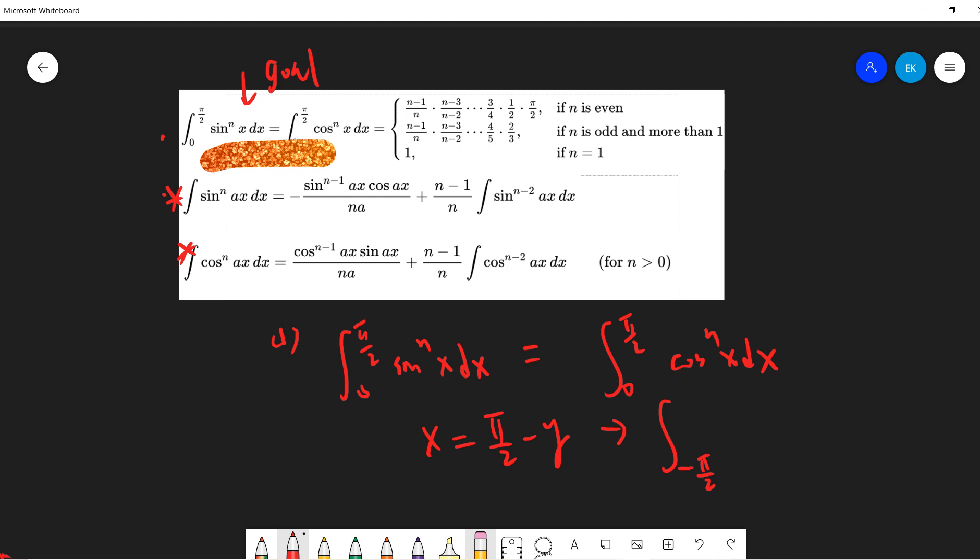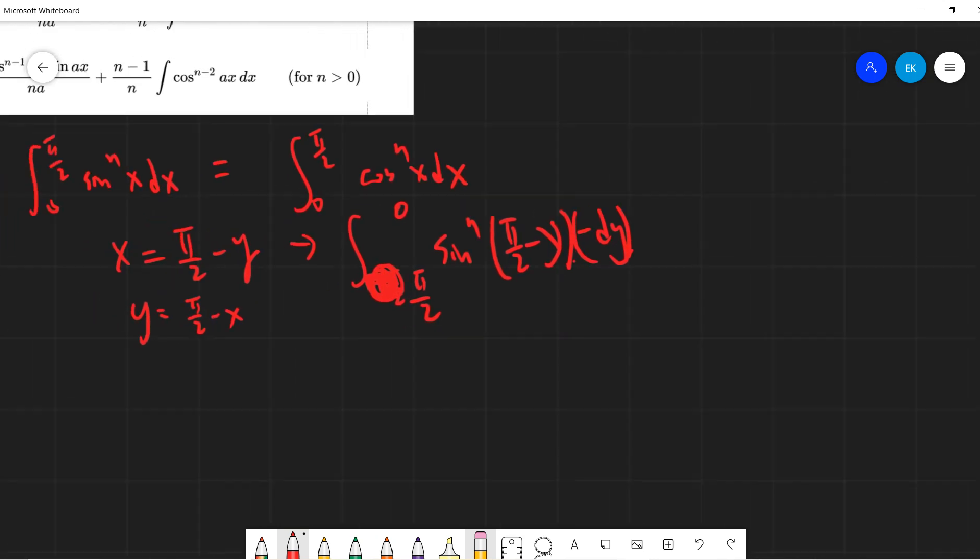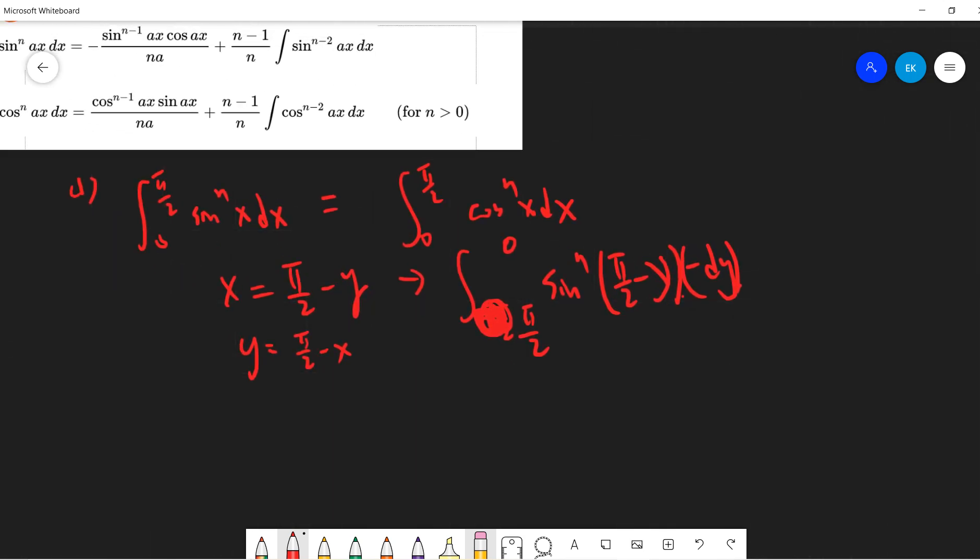So y equals pi over 2 minus x, right? So when x is 0, y is pi over 2, and when x is pi over 2, y is 0. And sine of pi over 2 minus y is basically just putting x equals 0 and x equals pi over 2.